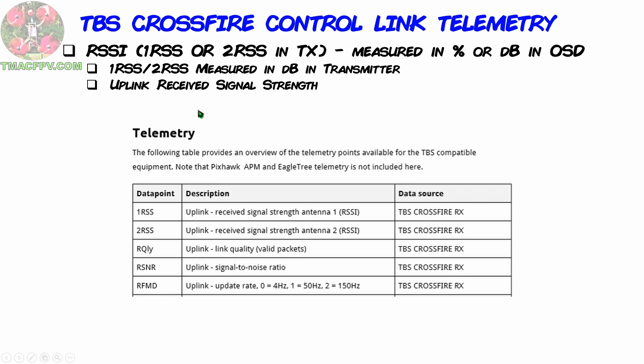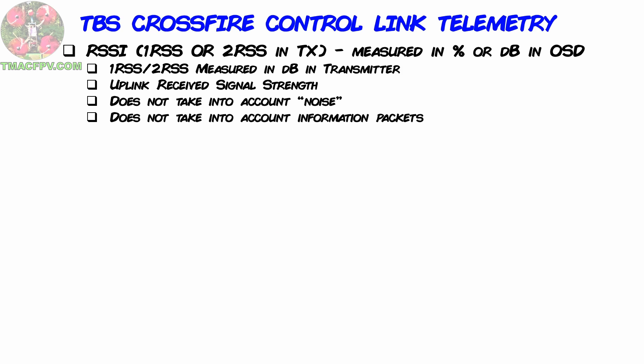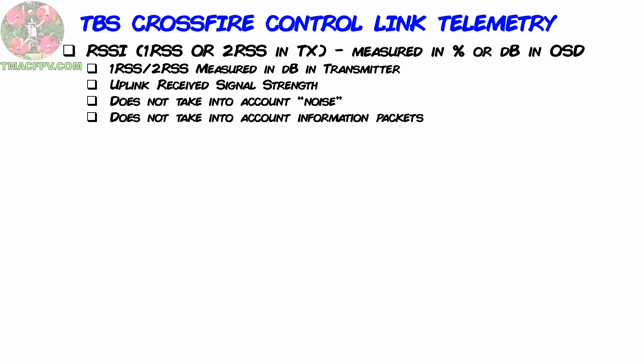Per the Crossfire manual, 1RSS and 2RSS telemetry values are your uplink received signal strength. One thing to keep in mind with RSSI is it does not take into consideration the amount of noise or interference in your flight environment. For example, your voice in a sporting event stadium would be the equivalent of your signal, whereas the rest of the crowd's voices would be the noise. You could be yelling something to a person at the end of your seating row but that person may not even hear you because of the crowd noise. The fact RSSI doesn't take into account valid information packets means even if your friend could hear you, he may not be able to understand what you're saying. Keep these things in mind when considering how useful RSSI may be to you.